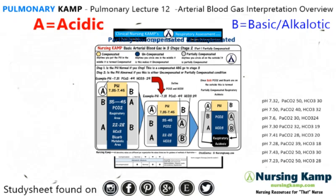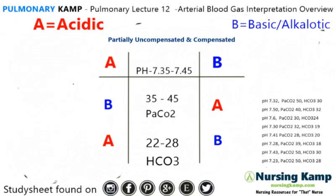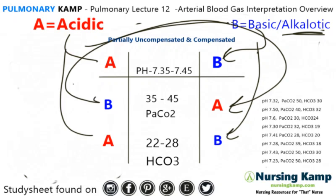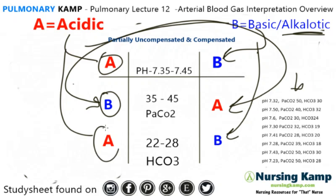So in the previous lectures I've been talking about ABG interpretation. When we're looking at ABG interpretation, this is the layout that we do — it's called the ABBABAB method. I find it the most accurate. The way it works is that the A stands for acidic and the B stands for basic or alkalotic. We basically go through an ABG and circle the letters that coincide with the ABG values.